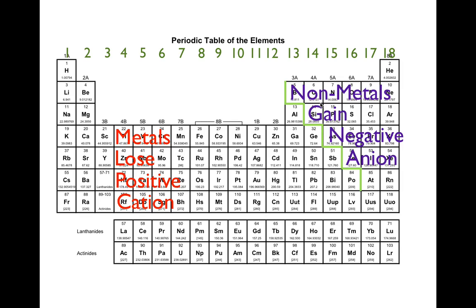So to review: left — metals; right — non-metals. Lose, gain. Positive, negative. Cations and anions. They're basically opposites of each other. Now let's look at some specific groups, some specific columns.